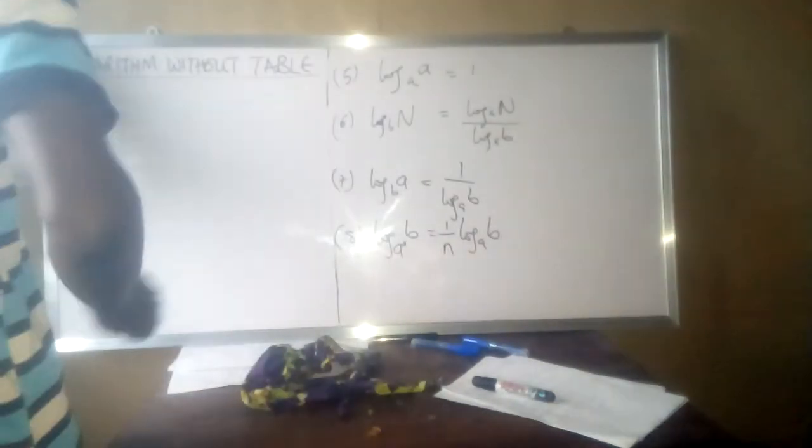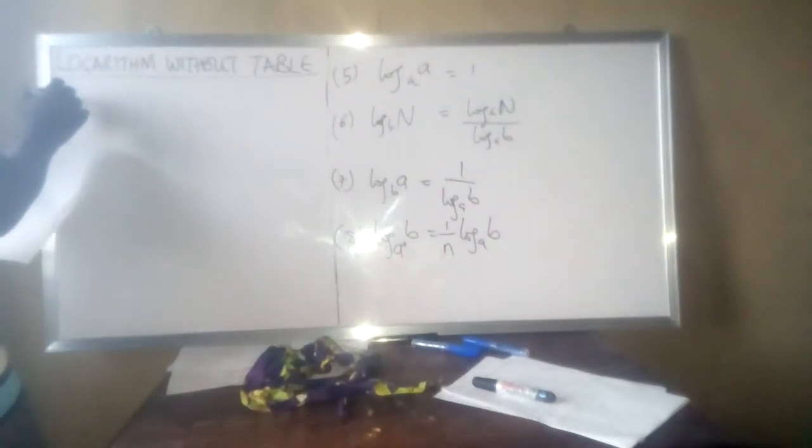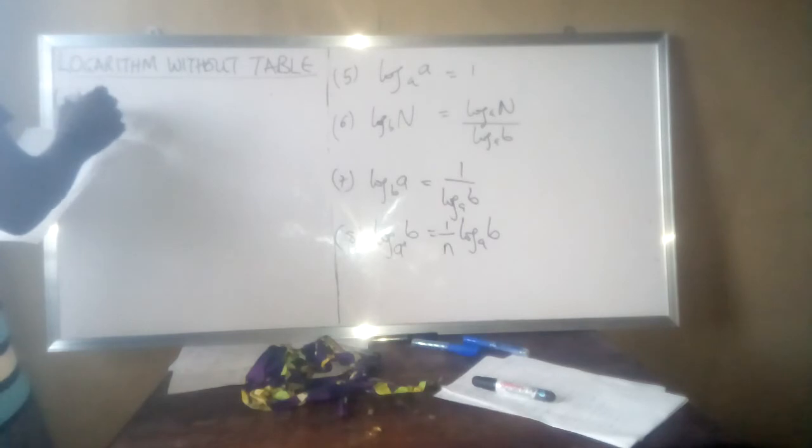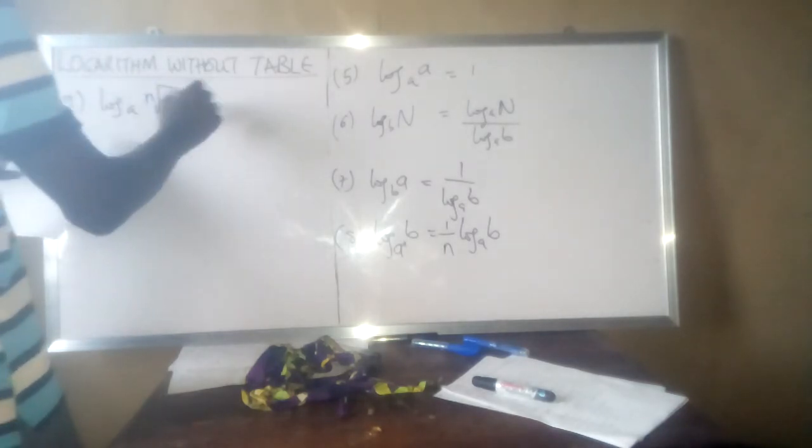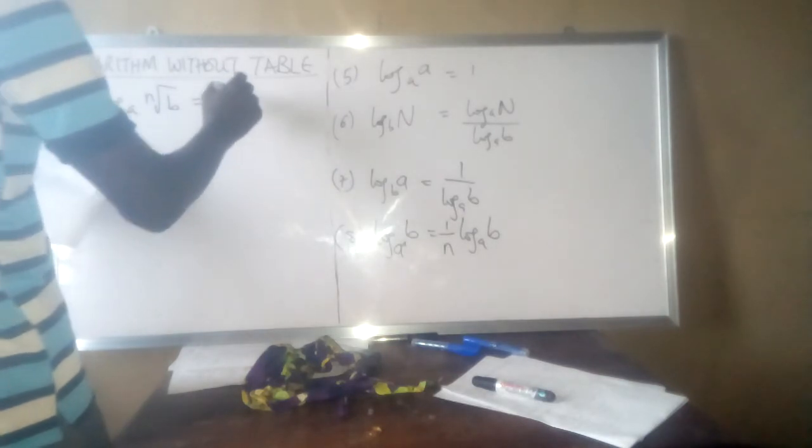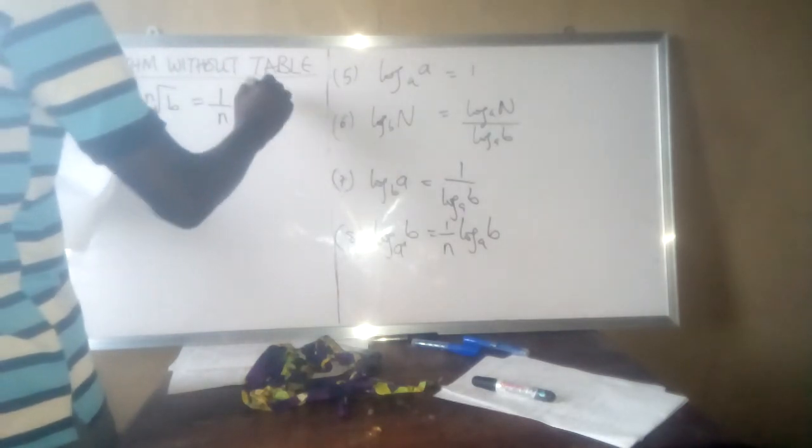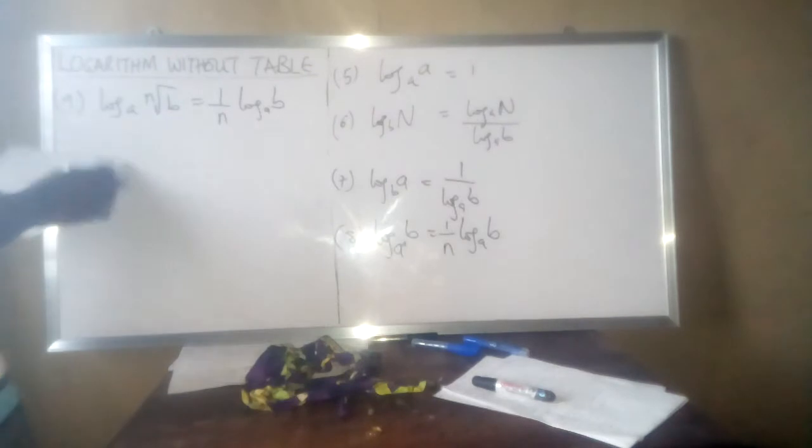The ninth one. Log n root b base a can also be written as 1 all over n log b base a.